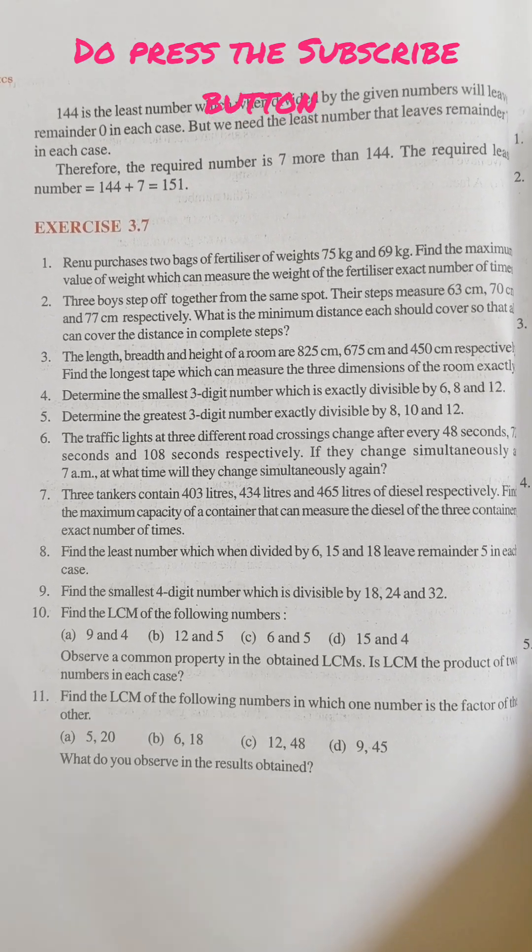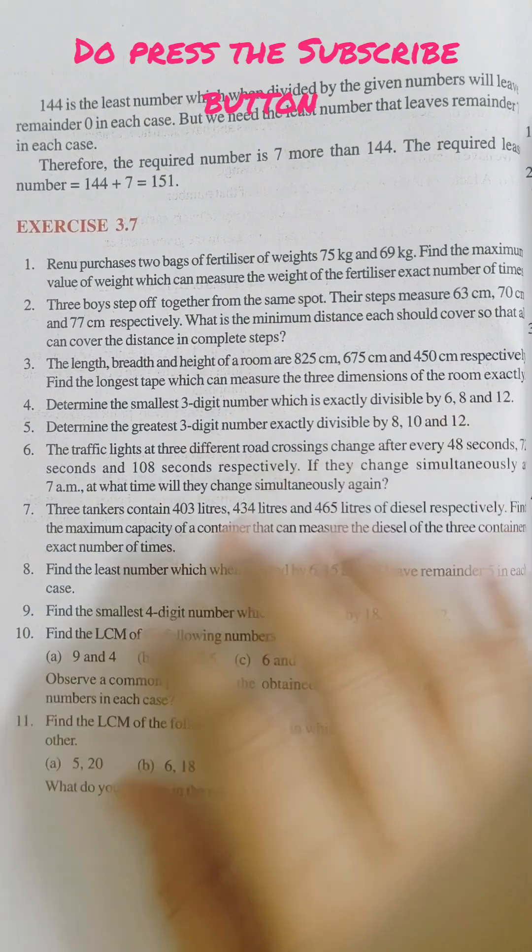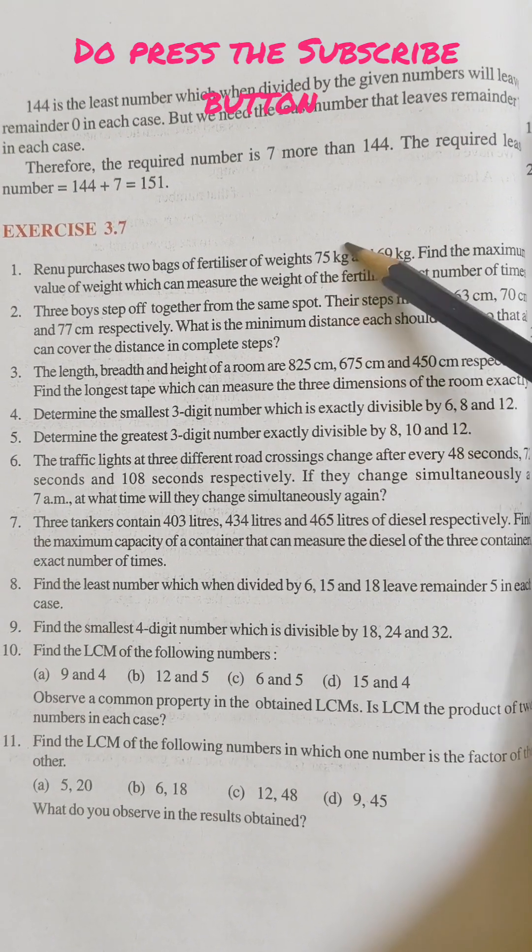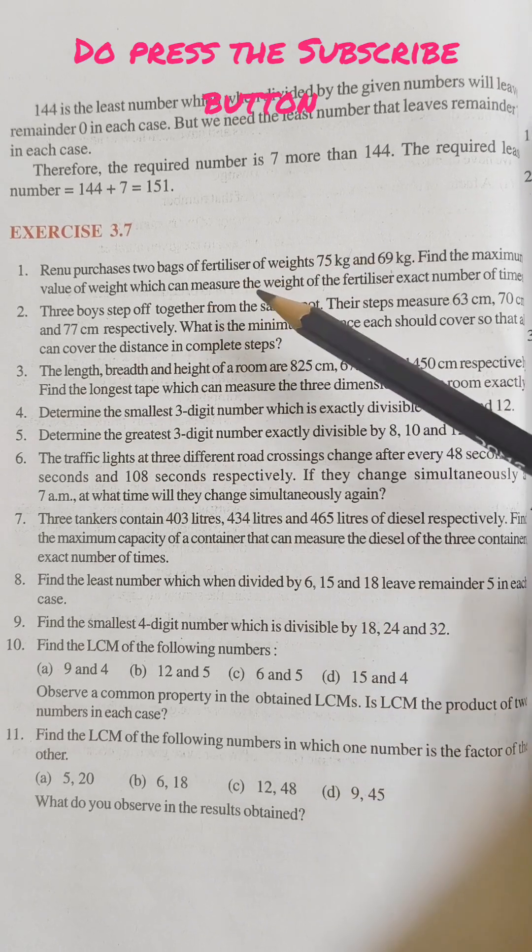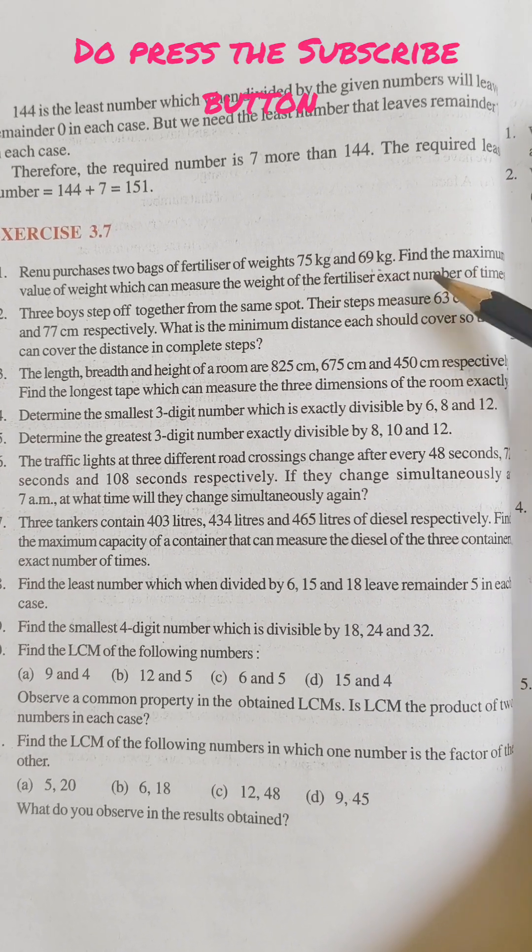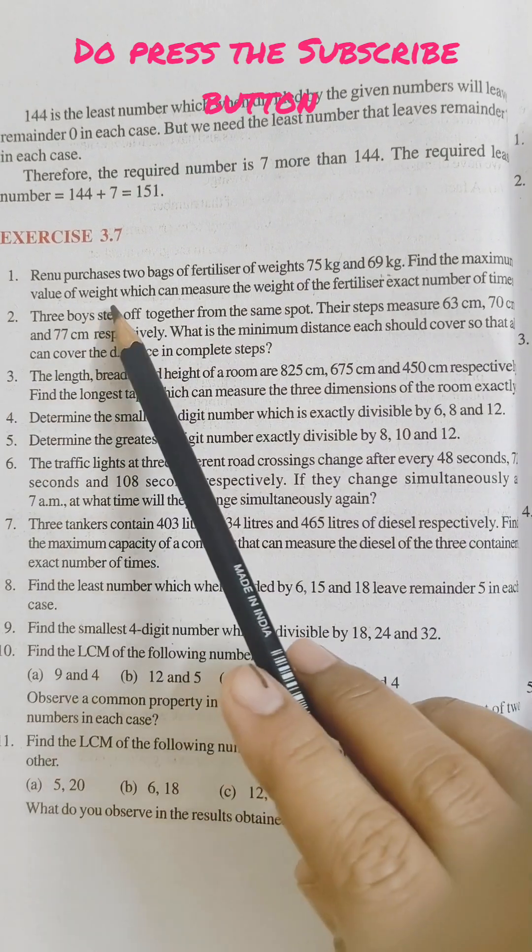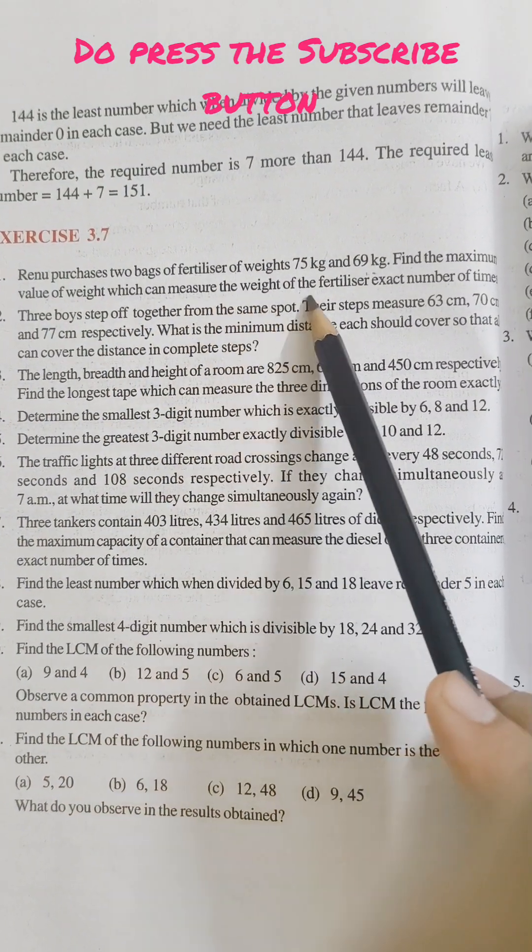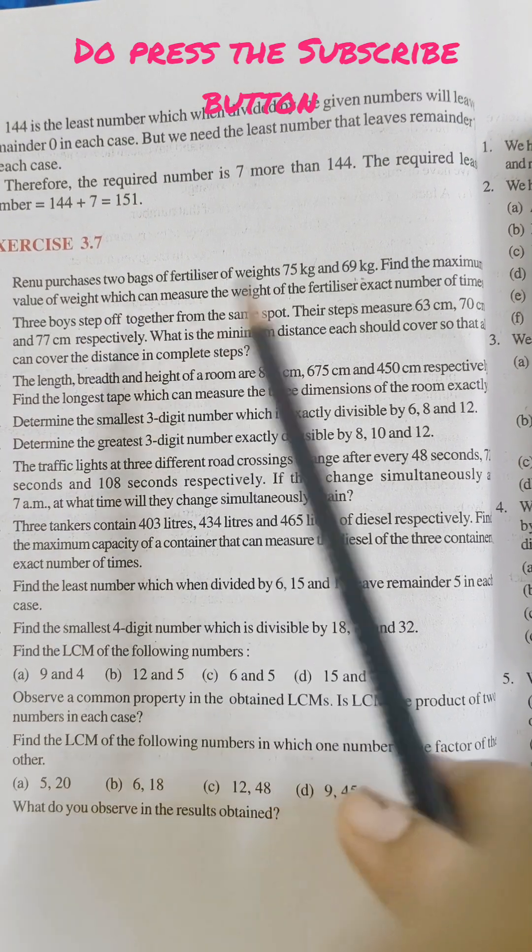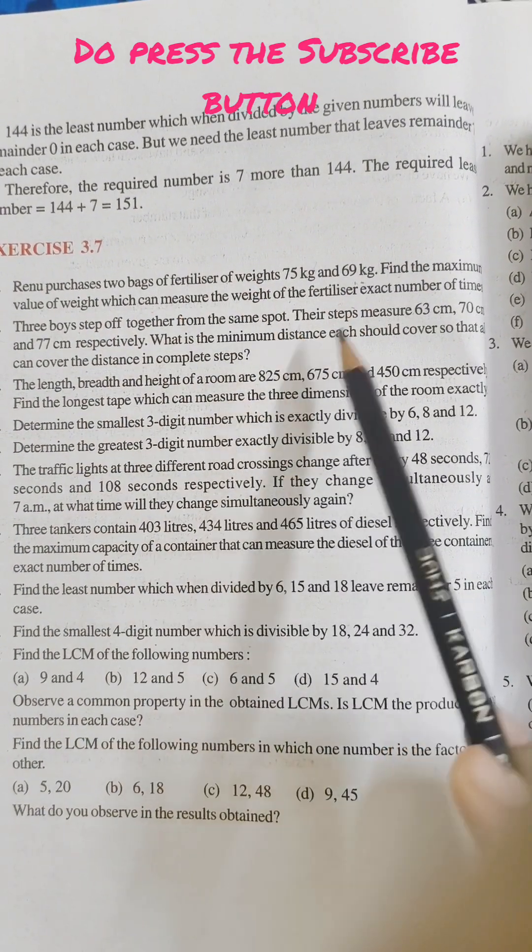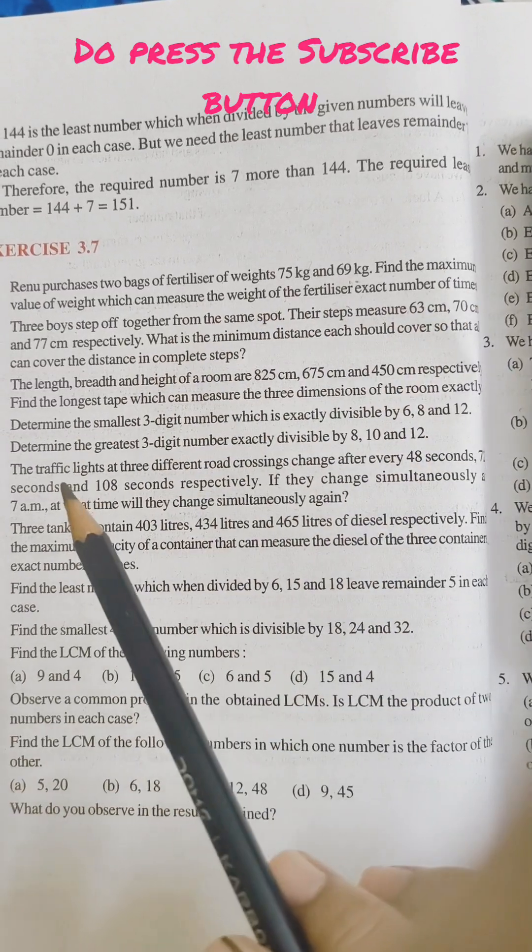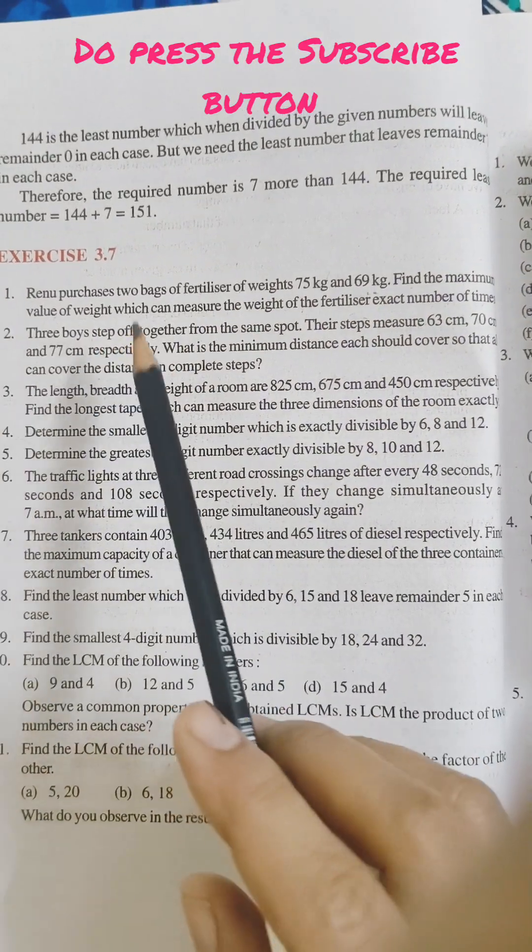Let's start with question number one, which says Renu purchases two bags of fertilizer of weights 75 kg and 69 kg. You have to find the maximum value of weight which can measure the weight of the fertilizer exact number of times.